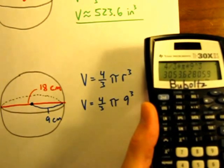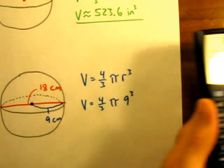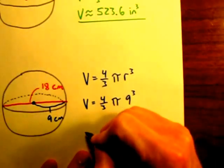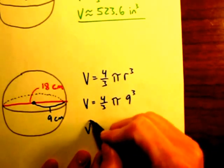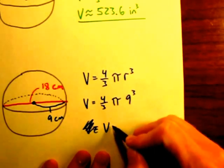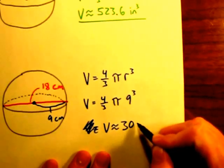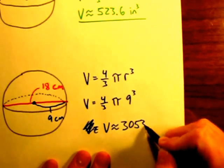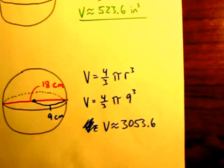Rounded to the nearest tenth is going to be 3,053.6. So volume is approximately 3,053.6.